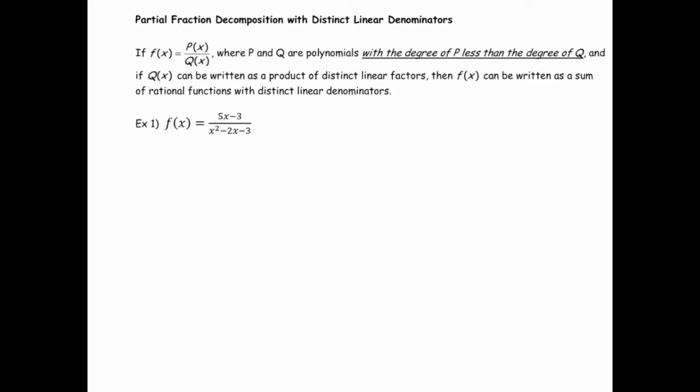It's also useful to help analyze the graphs of rational functions. So this is what it states: if f(x) equals p(x) over q(x), where those are both polynomials, and the degree of p(x) is less than the degree of q(x), in other words the degree of the numerator is smaller than the degree of the denominator, and if your denominator can be written as a product of distinct linear factors, then our function can be written as the sum of rational functions with distinct linear denominators.